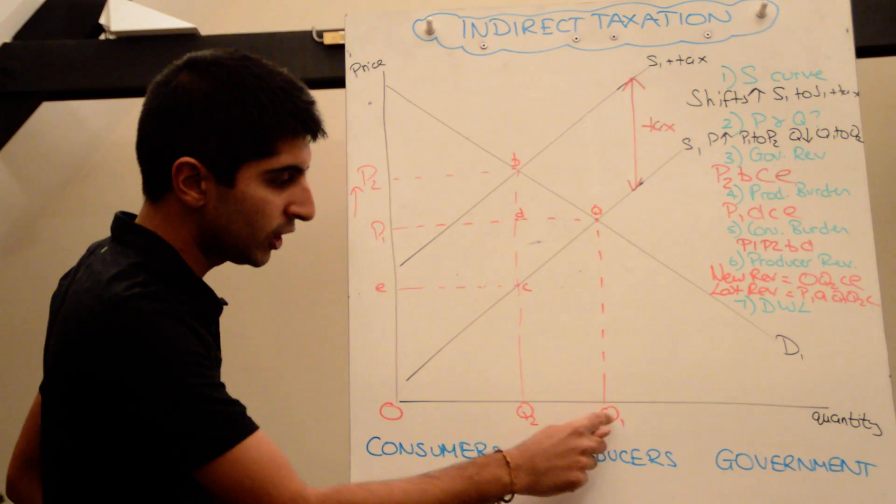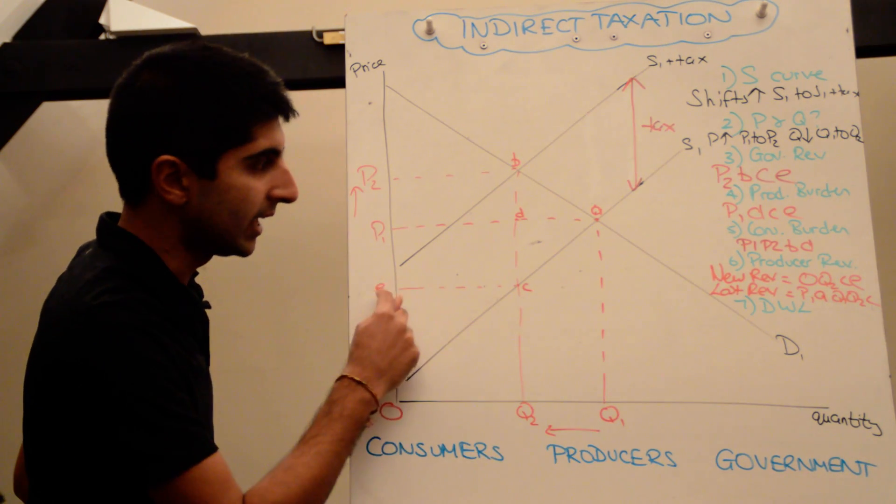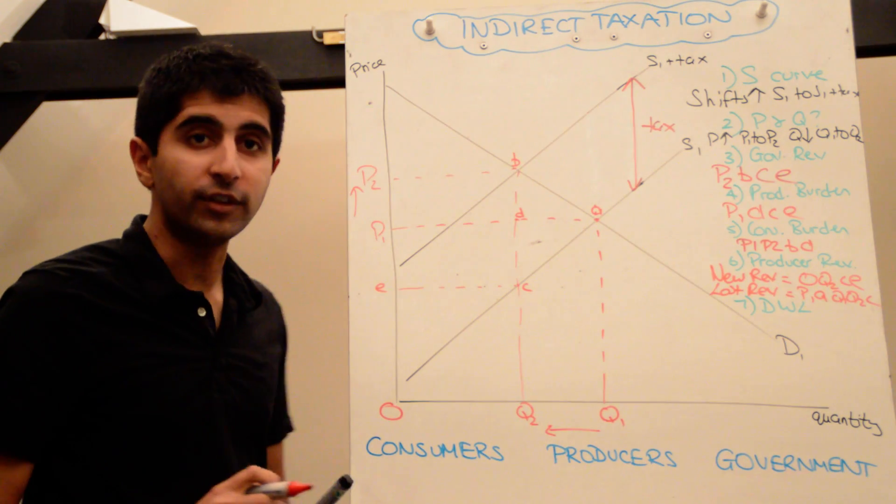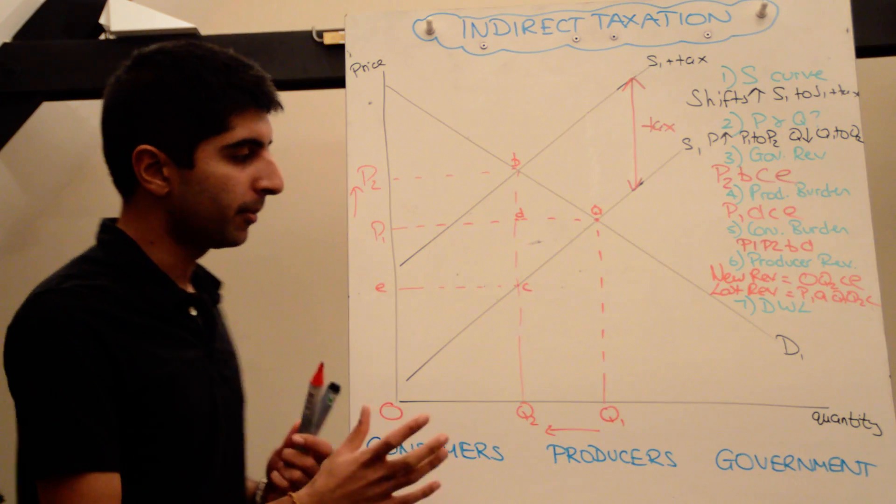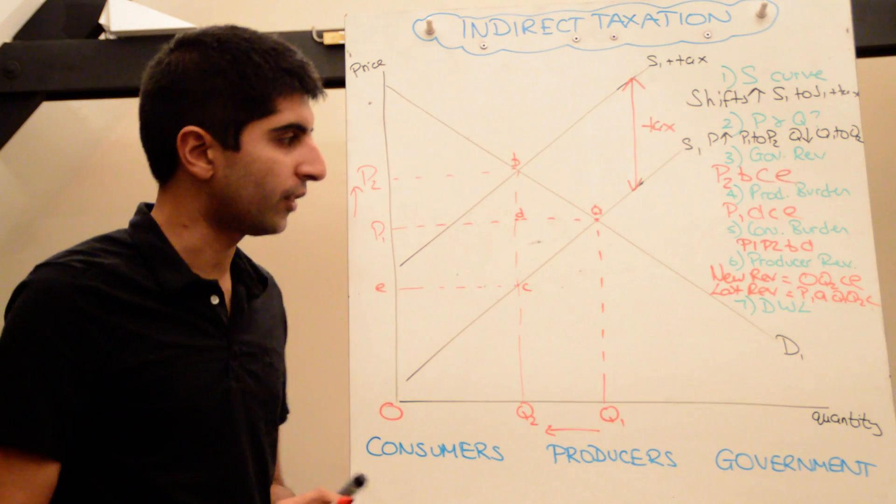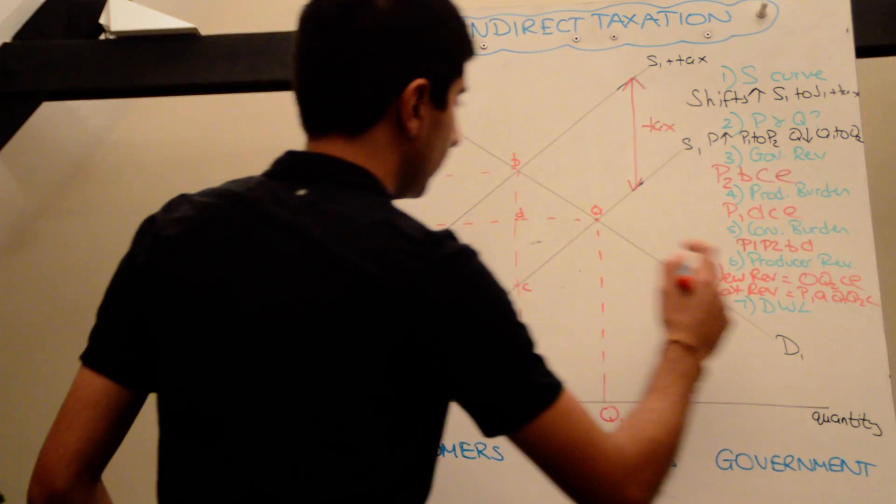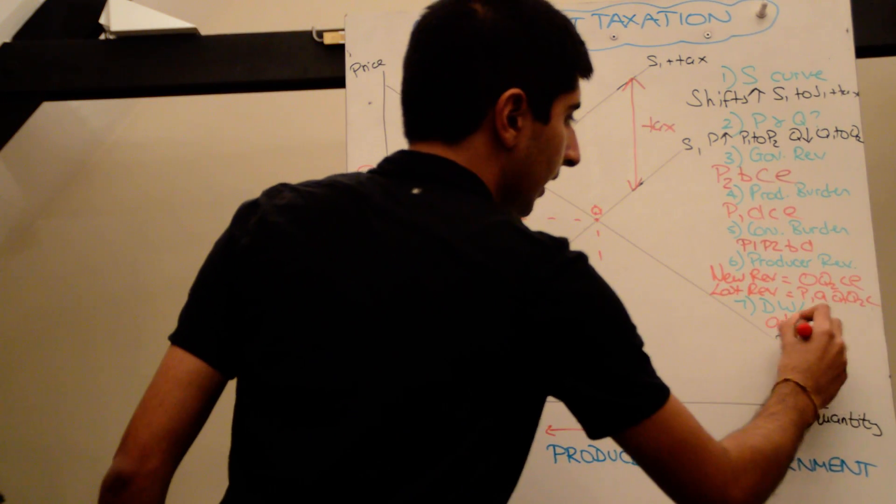It's like an inverted L shape: P1, A, Q1, Q2, C, and E. That entire area is how much the producer is actually losing out as a result of the tax being implemented. They're losing out a huge amount of revenue there. And we can also say there is a welfare loss. The deadweight welfare loss is the triangle A, B, and C.